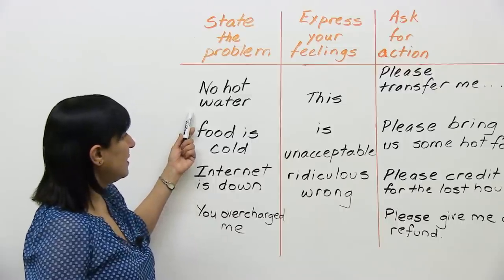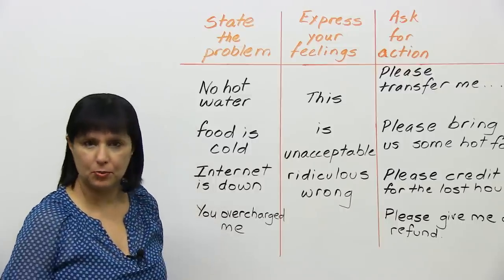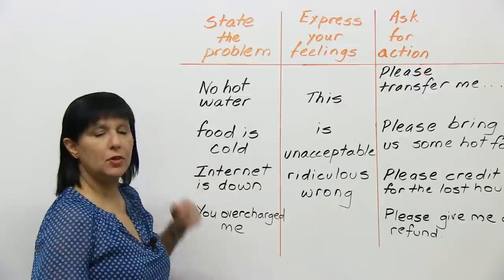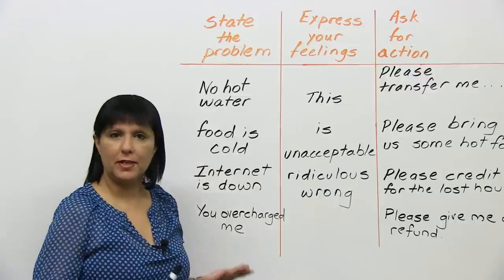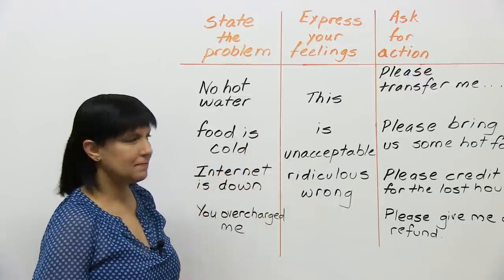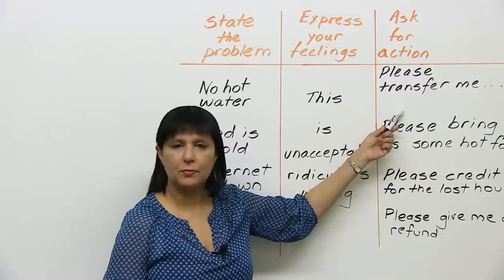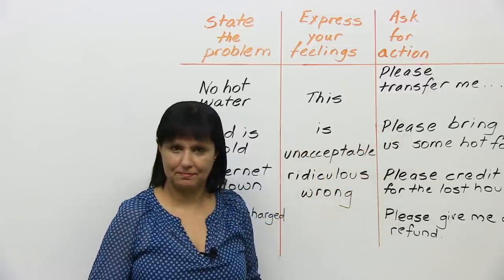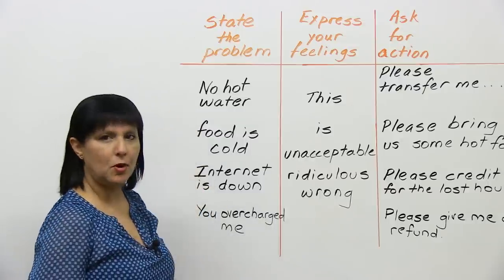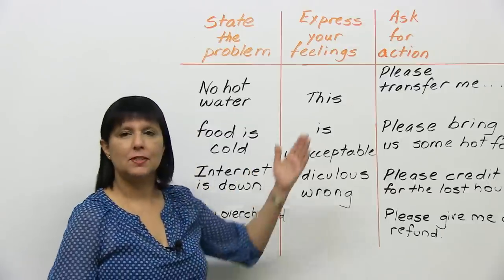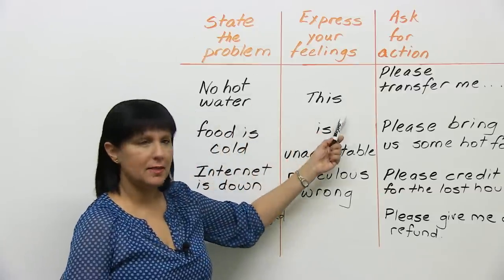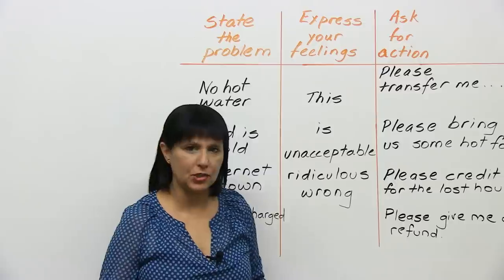Let's say you have no hot water in your hotel room. State the problem — you say: we have no hot water in our hotel room. Express your feelings: this is unacceptable. Ask for action: please transfer me to another room. State the problem, express your feelings, ask for action.